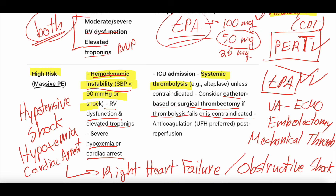Systemic thrombolysis is not without risk — about 10% of patients who receive thrombolysis can have a systemic bleed, and roughly 2-5% can get intracranial hemorrhage. But massive, high-risk PEs are so severe that TPA is the guideline-recommended therapy and should be given to these patients assuming there's no firm contraindication, such as recent surgery or active bleeding.